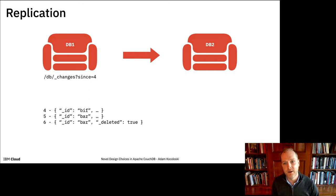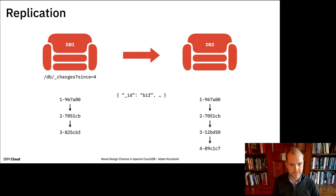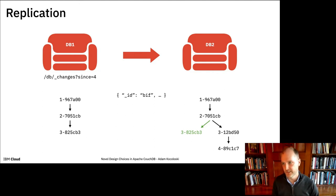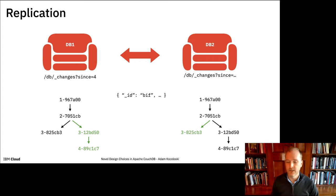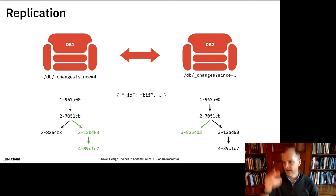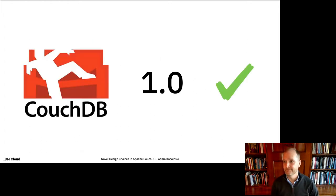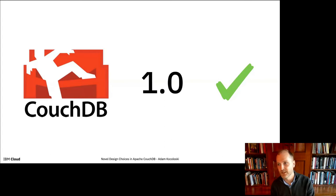Circling back to the replication piece: with the incremental changes feed, we get the list of updated documents. If I drill into document four and say I'm replicating from DB1 to DB2, I recognize that a particular revision isn't present on DB2, so I create an edit branch in the history there. For active-active, I just run the process in reverse — it's basically two separate replications happening simultaneously. And I repeat that process for every document showing up in either server's changes feed. That essentially was CouchDB 1.0.